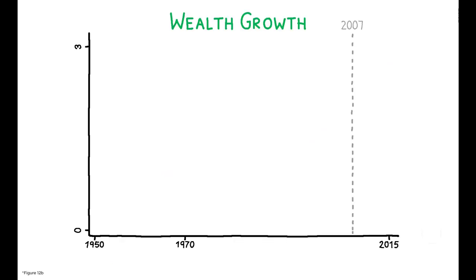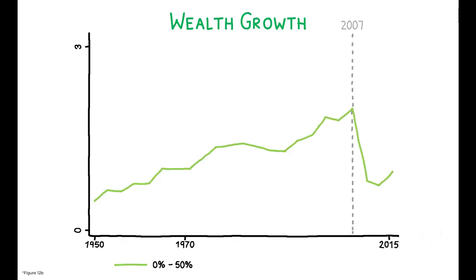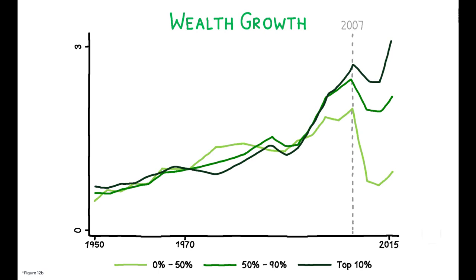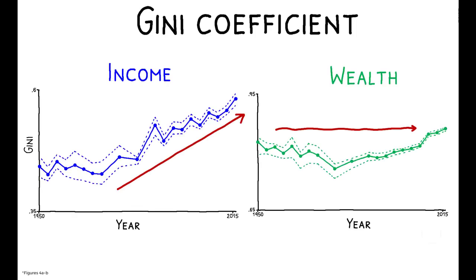The picture looks very different when we examine wealth growth across these same groups. From 1971 to 2007, wealth growth was largely identical across the distribution. Hence, the pattern seen earlier: while income inequality rose over this period, wealth inequality was relatively flat.